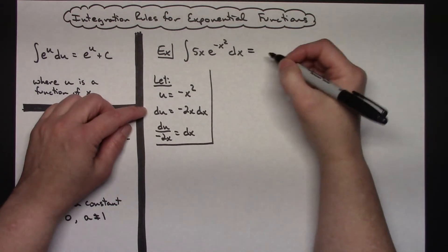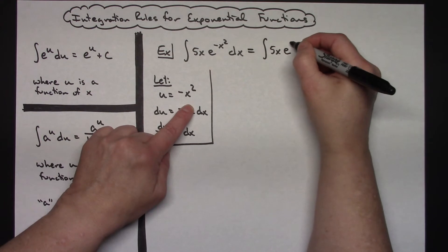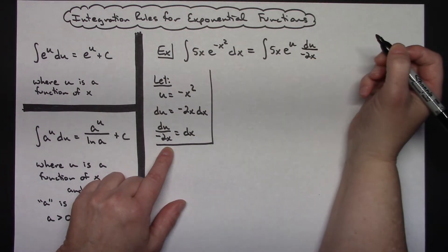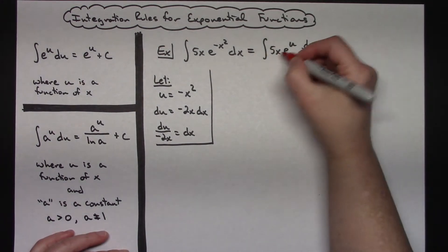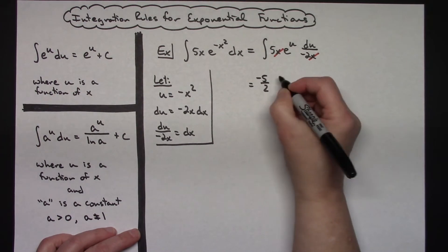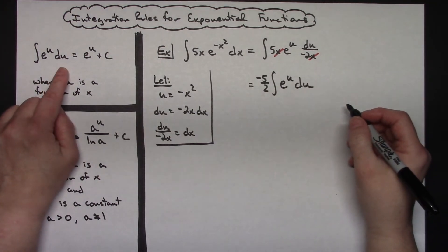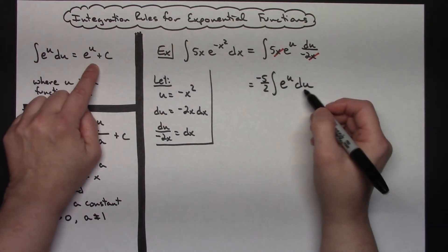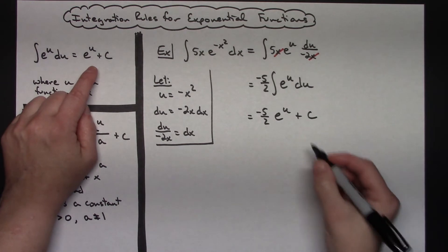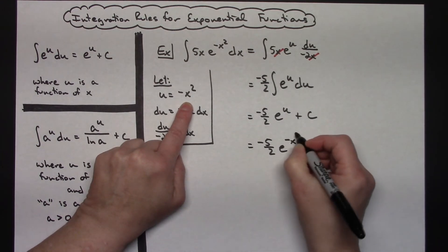Substituting back in, I'm going to have the integral of 5x times e to the u, and then substituting in for dx: du over negative 2x. The x's are going to cross out, and I can pull out a negative 5 halves. So in my next step I pull out that negative 5 halves in front of the integral, then I will be integrating e to the u du, which is what we wanted — our formula. When we integrate e to the u du we get e to the u plus c, so I have negative 5 halves times e to the u plus c. Plugging back in for u: negative 5 halves times e to the negative x squared plus c.